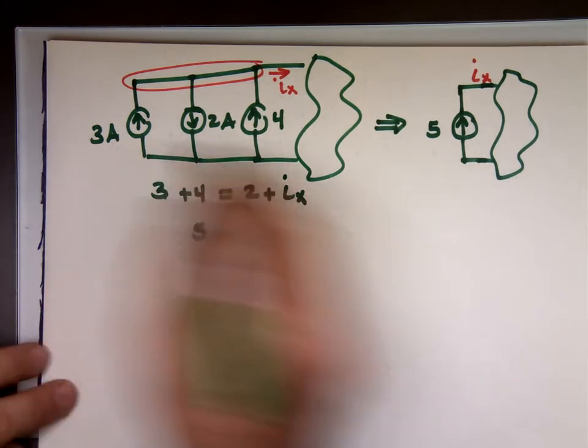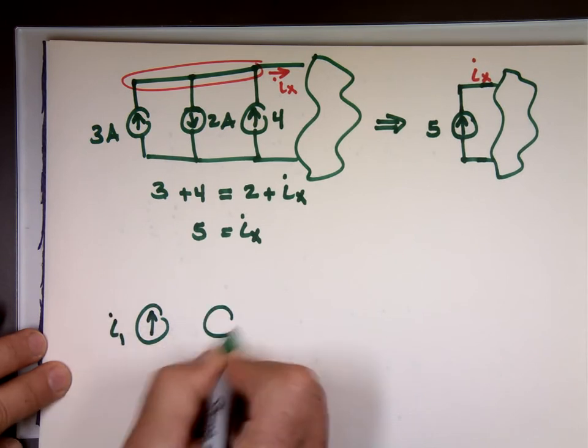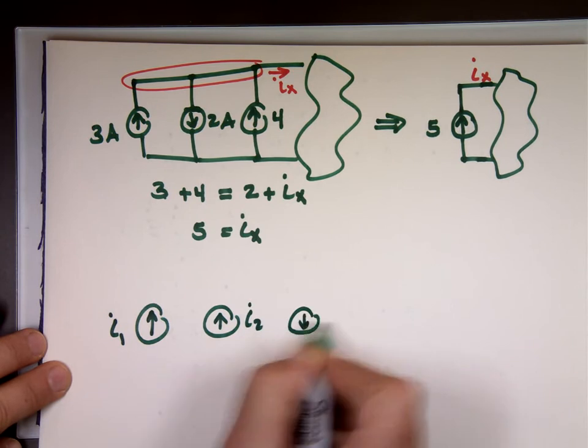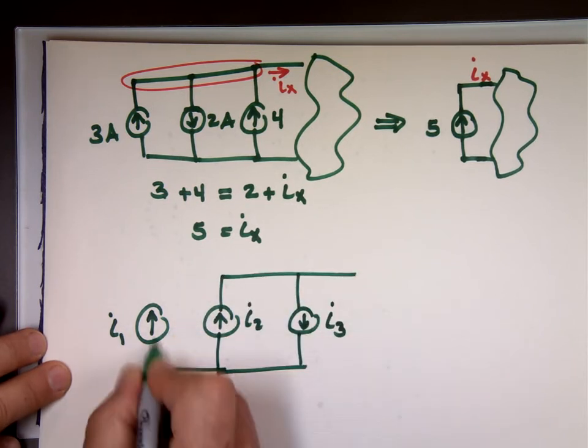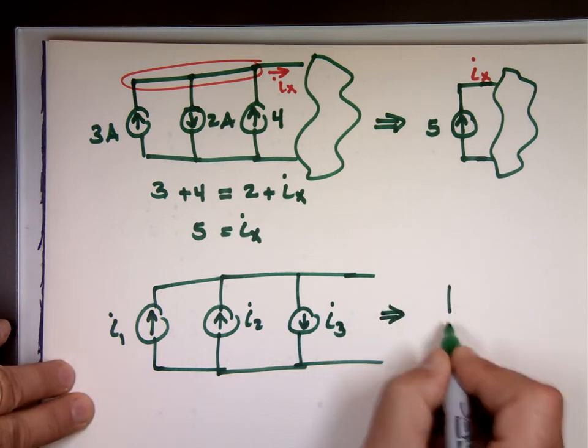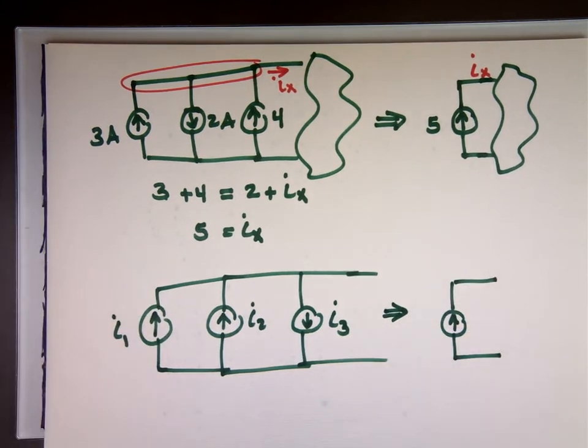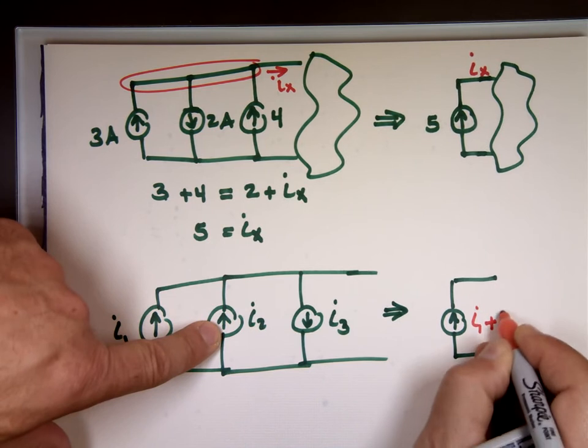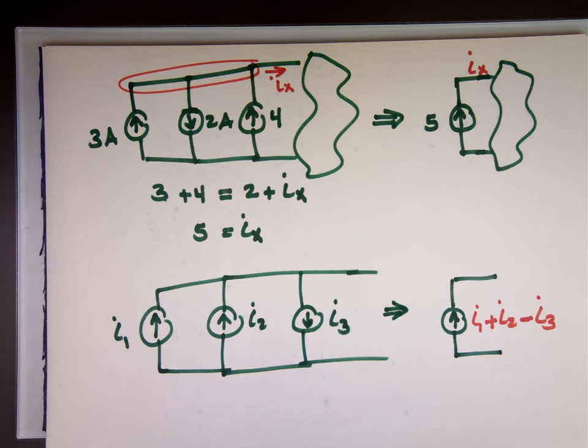So now when we have current sources in parallel, let's say this is I sub 1, and this is I sub 2, and this is I sub 3, and they're all connected in parallel. We can replace them with one current source. If I want it pointing upward in the same direction as these guys, that current has to equal I1 plus I sub 2, what about this one? Minus I sub 3. It has to be this plus this minus that one.